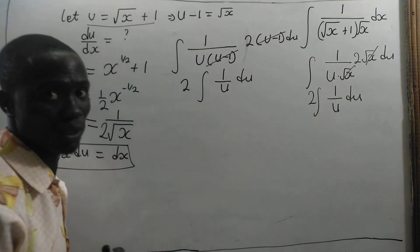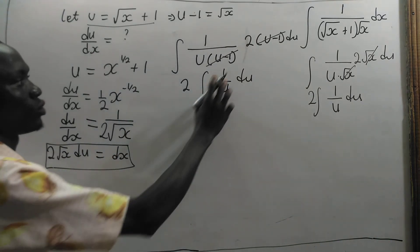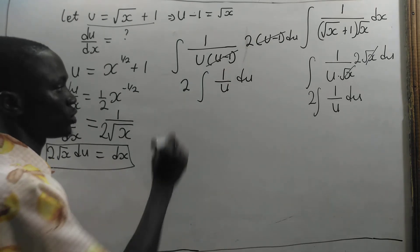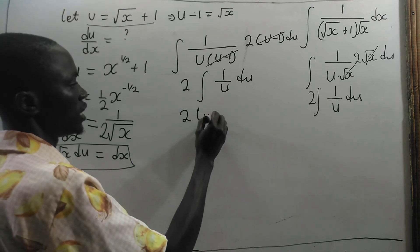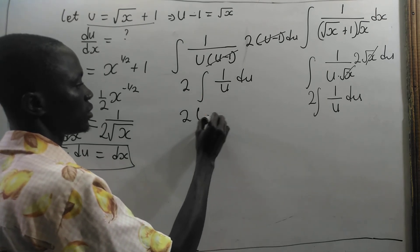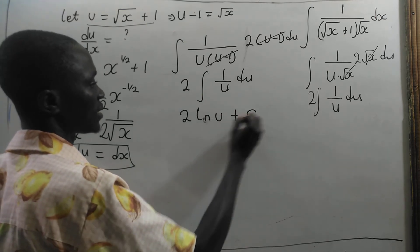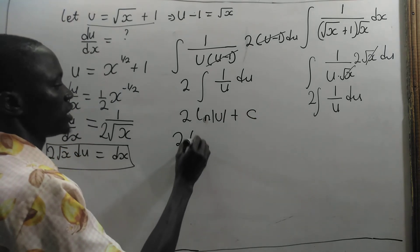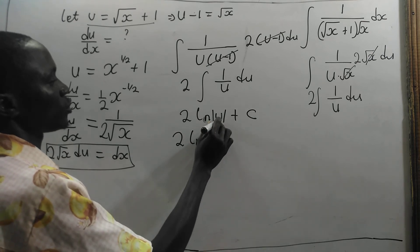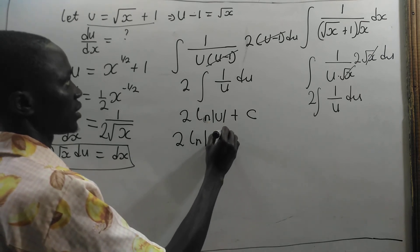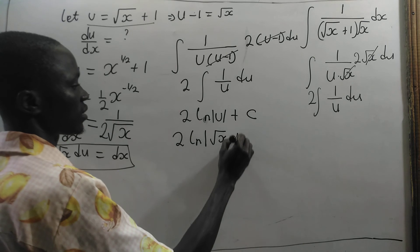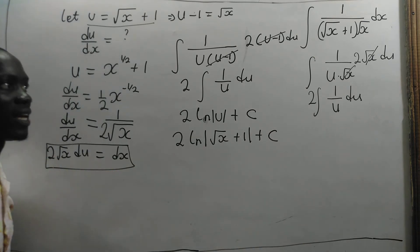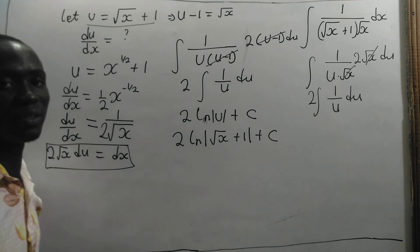So this is a standard integral. If we integrate 1 on u you get ln u. So you have 2 ln u plus c. Let's make the absolute value sign. So we are going to have 2 ln, and what is u? u is the square root of x plus 1 plus the constant c. And we are done with our integration.